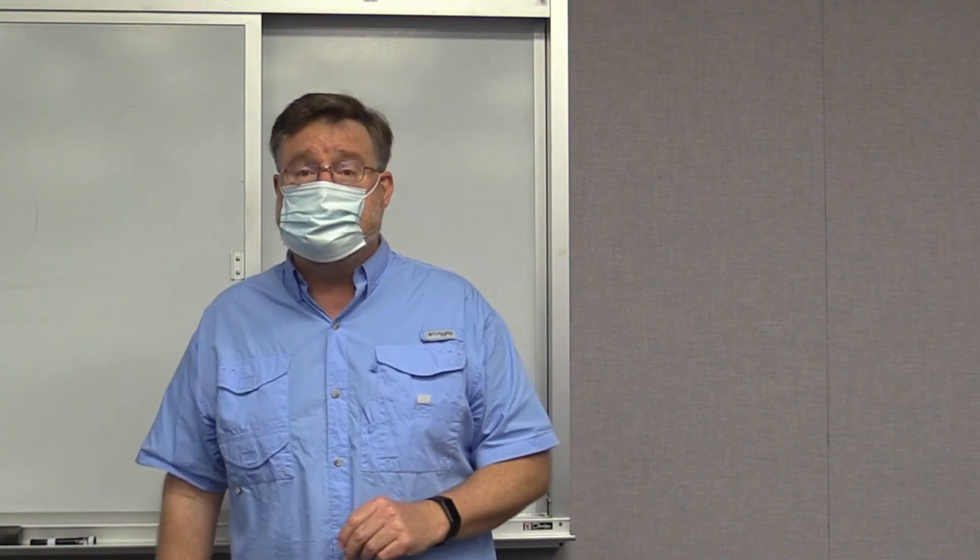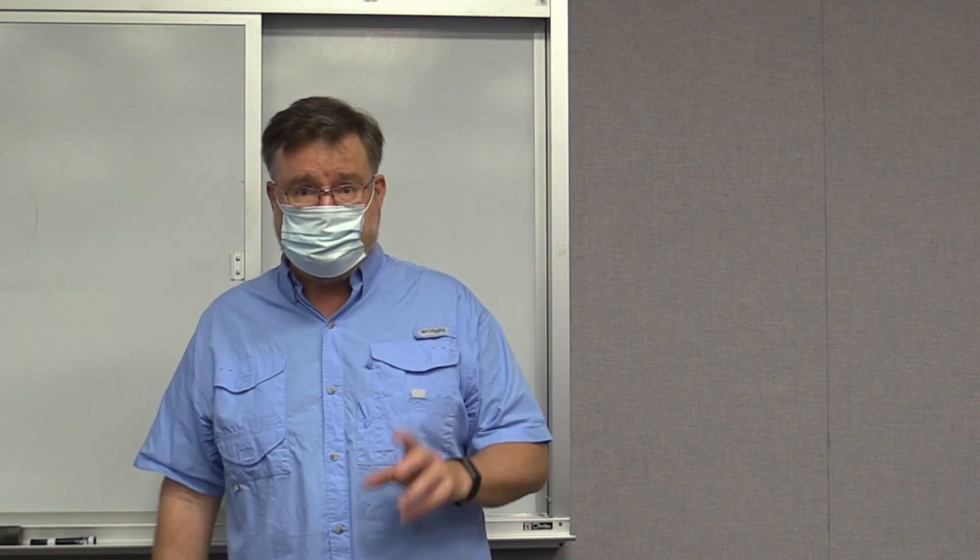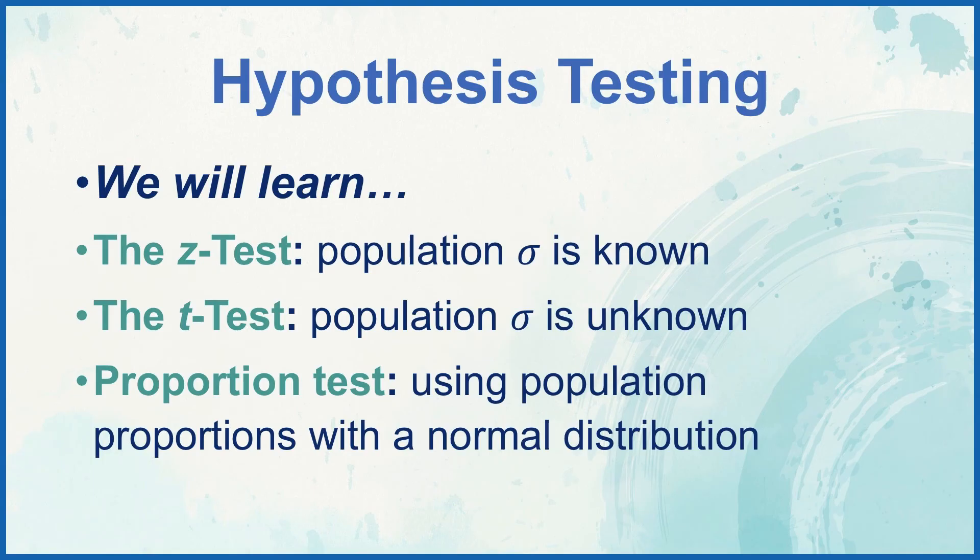The three tests that we are going to learn about this week are a one-sample z-test, which we use when we know the standard deviation of the population, a one-sample t-test, which we use when we do not know the standard deviation of the population, and a proportions test. Each of those tests we will do using our five steps of hypothesis testing.